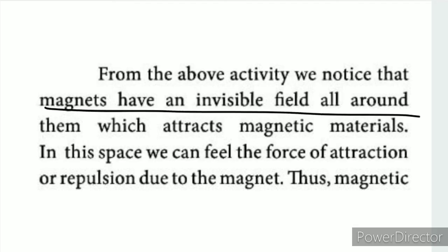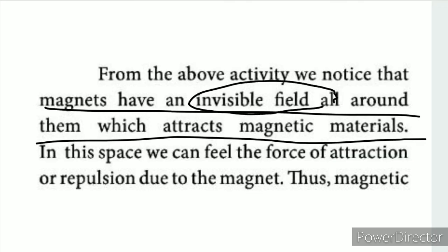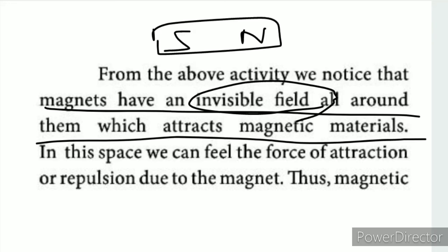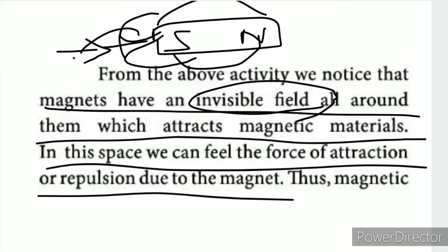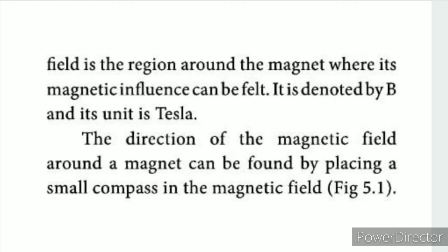From the above activity, we notice that magnets have an invisible field all around them which attracts magnetic material. This is the North Pole and this is the South Pole. The magnetic field exists around the poles. In this space, we can feel the force of attraction or repulsion due to the magnet. The magnetic field is the region around the magnet where its magnetic influence can be felt.